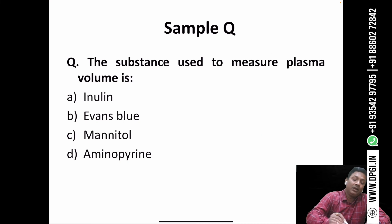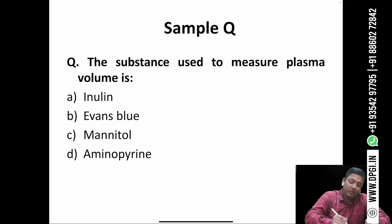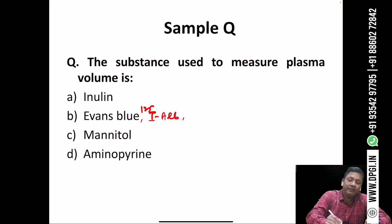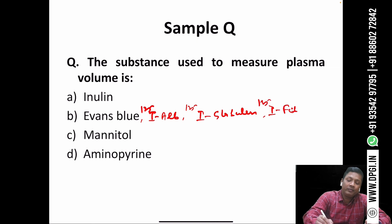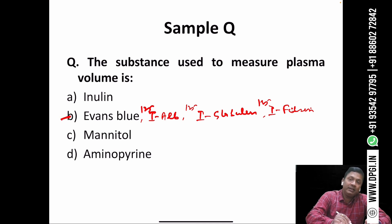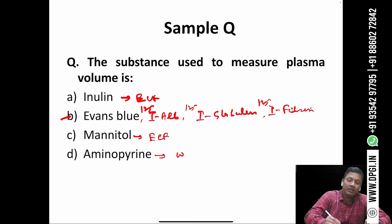Another sample question: 'The substance used to measure plasma volume is?' The options are inulin, Evans blue, mannitol, and aminopyrin. Plasma volume is estimated by Evans blue, as well as radioactive albumin, globulin, and fibrinogen. So the answer is Evans blue. Inulin and mannitol are used to estimate ECF; aminopyrin is used to estimate body water.